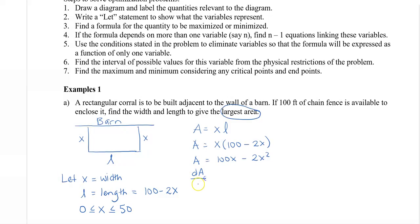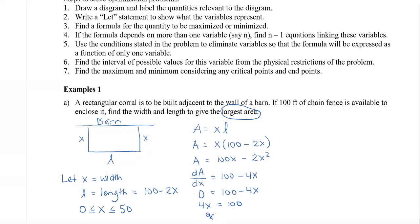Now we find the derivative: dA/dx = 100 − 4x. To maximize, we find the peak by setting dA/dx equal to zero. So 100 − 4x = 0, which gives 4x = 100, and therefore x = 25.